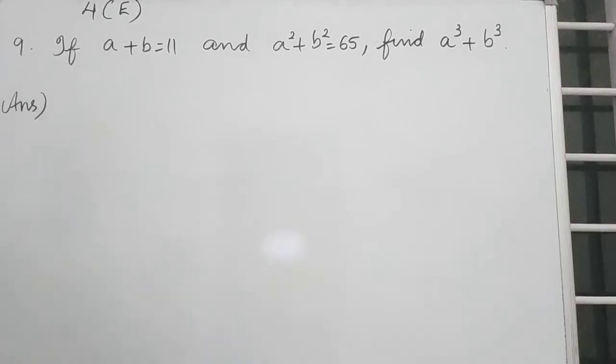Hi everyone, we can continue Exercise 4E. Now we can do question number 9. If A plus B is equal to 11 and A square plus B square is equal to 65, find A cube plus B cube.